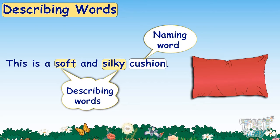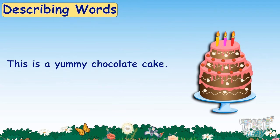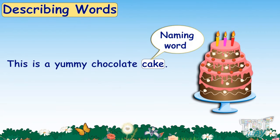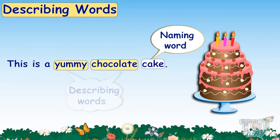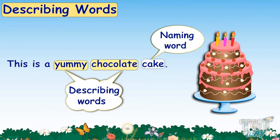Here is another example. This is a yummy chocolate cake. The object we are talking about is cake, so cake is a naming word. And the words that are describing the kind of cake it is are yummy and chocolate. So, yummy and chocolate are describing words for the naming word cake.